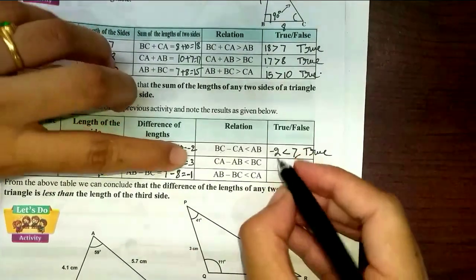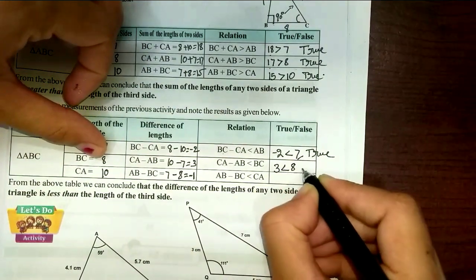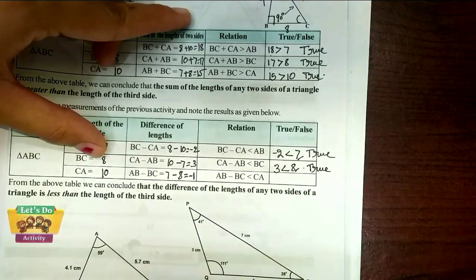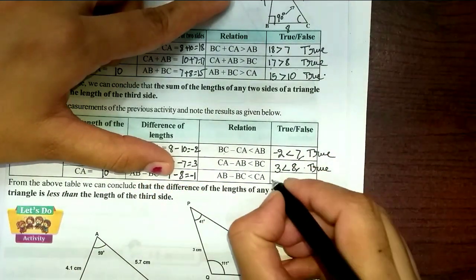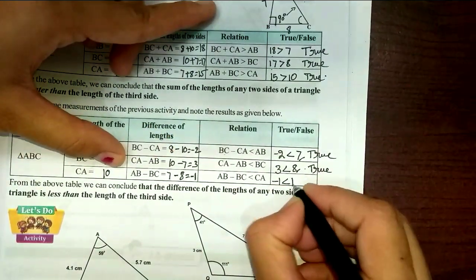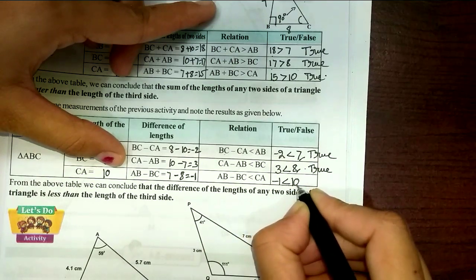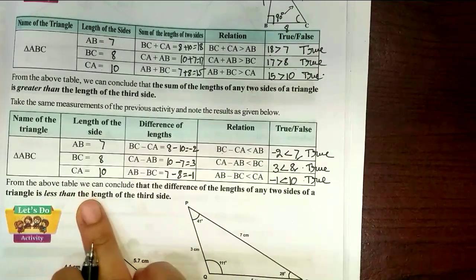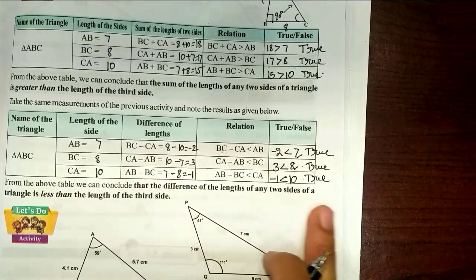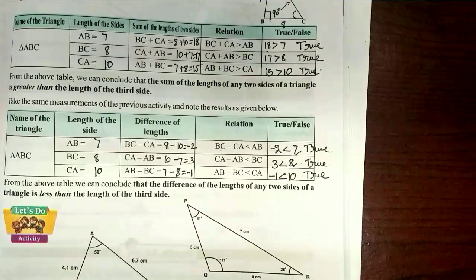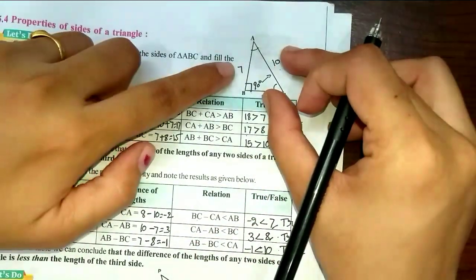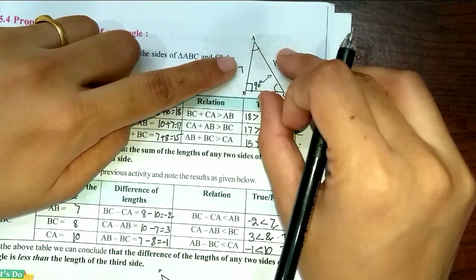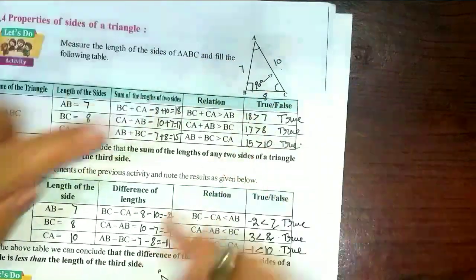CA minus AB is 3, which is less than BC which is 8 — true. AB minus BC is minus 1, which is less than CA which is 10 — true. From the above table we can conclude that the difference of the length of any two sides of a triangle is less than the length of the third side.